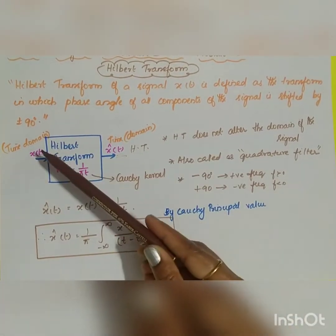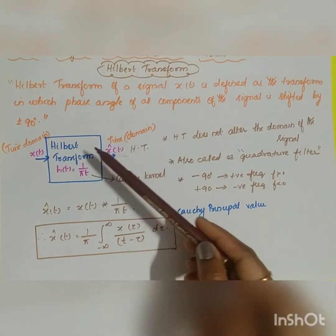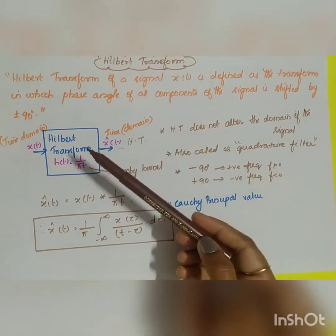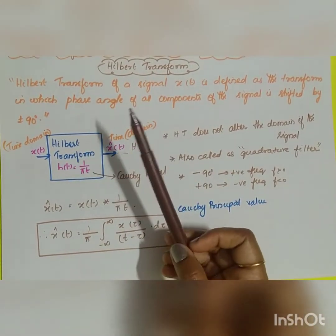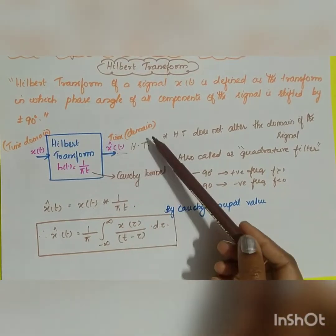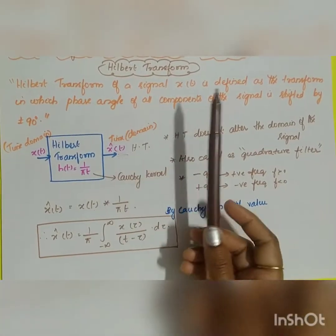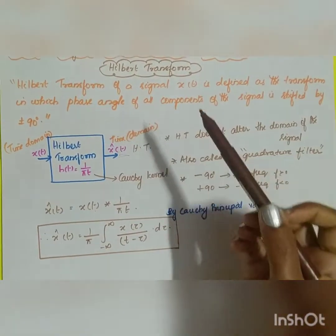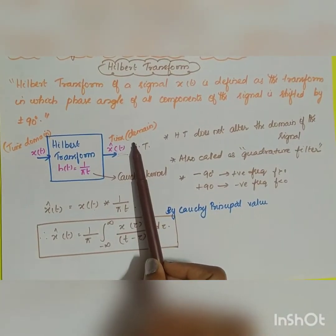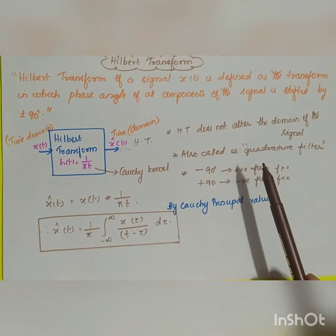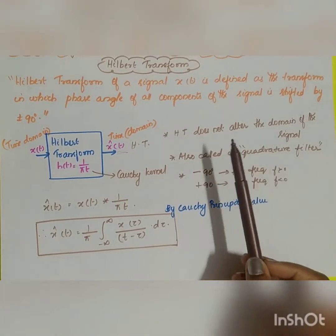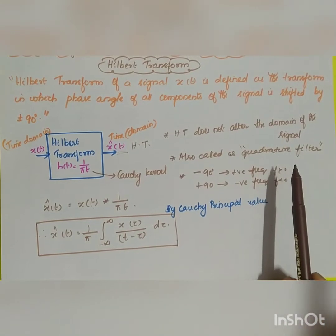One important characteristic of the Hilbert transform is that, unlike the Fourier transform, it does not involve the conversion of one domain to another domain. In this case, both input and output are in the time domain. There is no domain conversion — input is in the time domain and output is also in the time domain. That is, the Hilbert transform does not alter the domain of the signal.